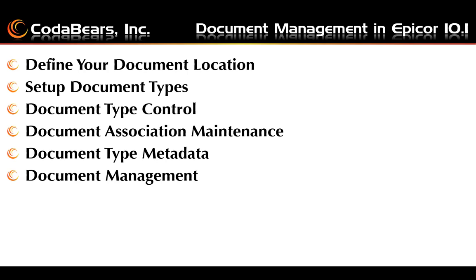The Document Type Metadata menu item is used to set up if you're using a SharePoint location for your documents. There is also a Document Management menu item in the Document Management module, and this menu item is used to set up links to external files. For example, if you wanted to set up terms and conditions and certification files, they might be defined here.